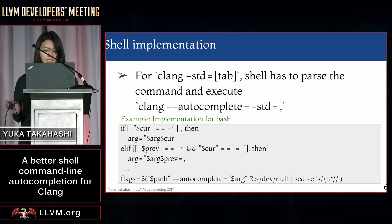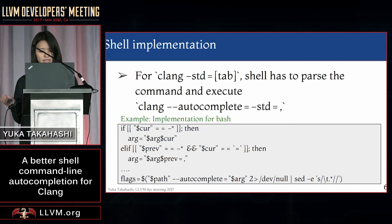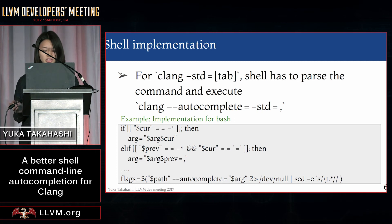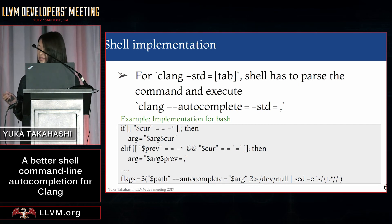This is an example of a bash frontend implementation. When Clang minus std equal tab was typed by the user, the shell has to parse the command and execute Clang minus autocomplete equal minus std equal and print the result from Clang.